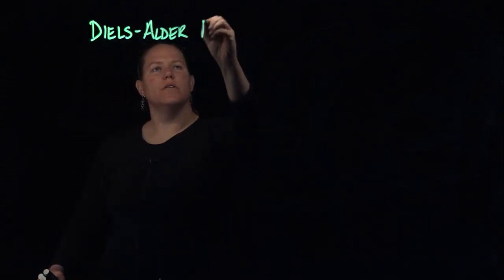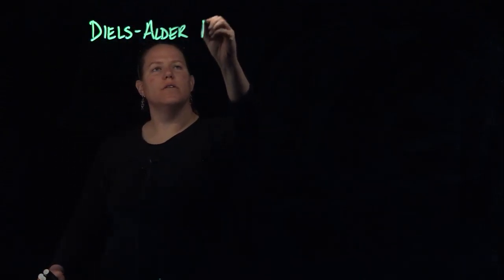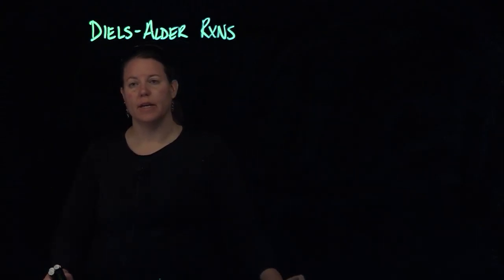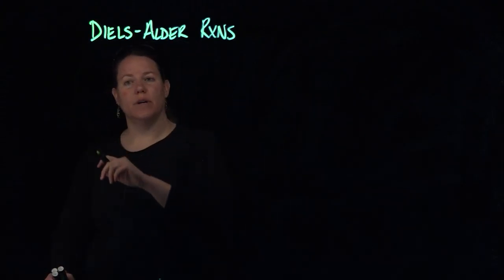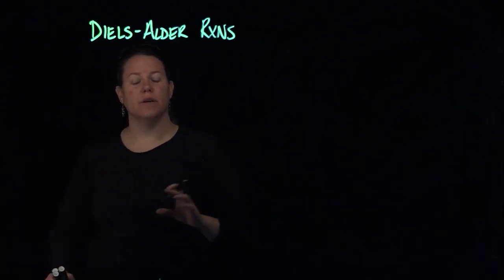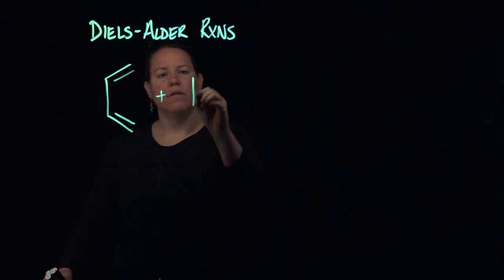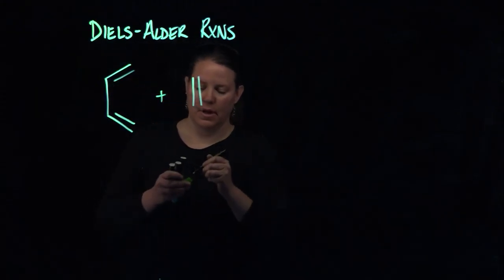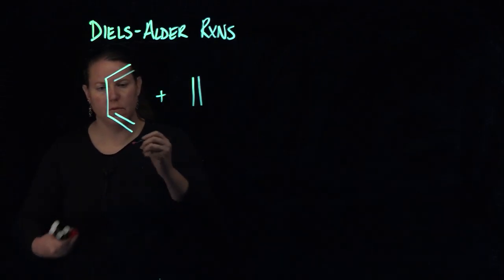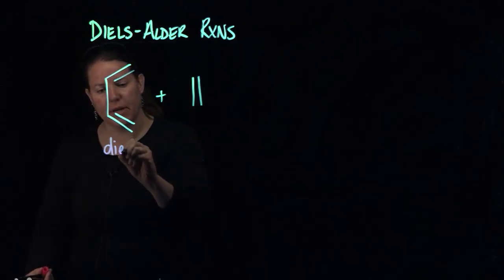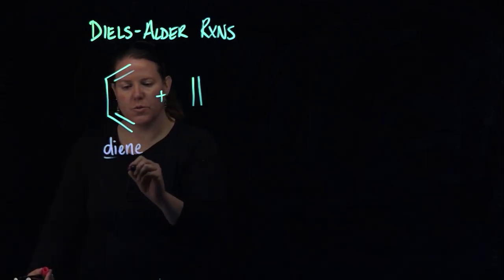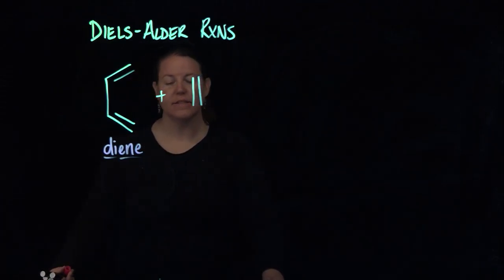Diels-Alder reactions really happen with conjugated dienes, and what you usually see is cis-conjugated dienes that are reacting with some kind of double bond or regular alkene or alkyne, something that has pi electrons.